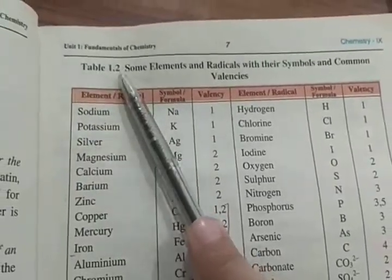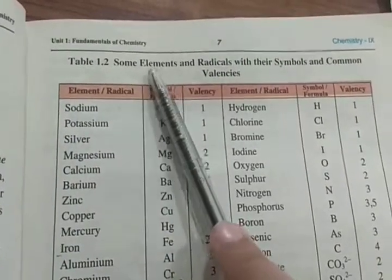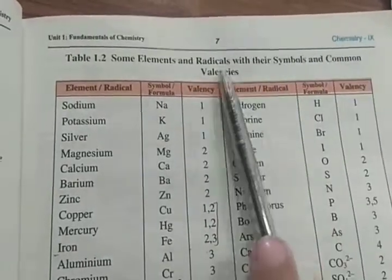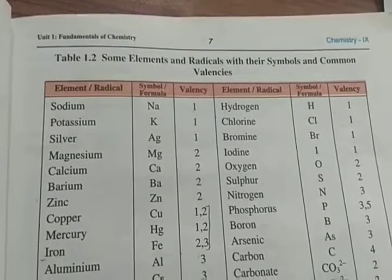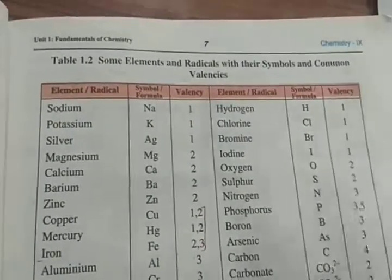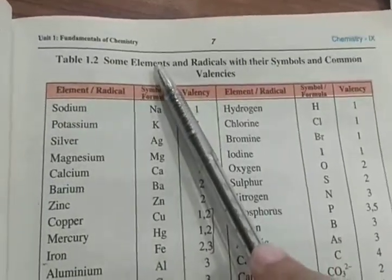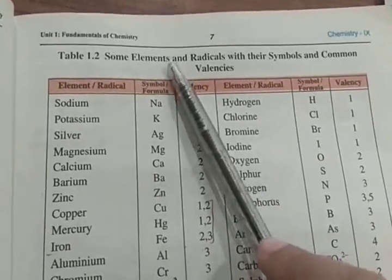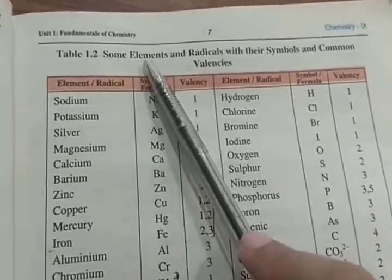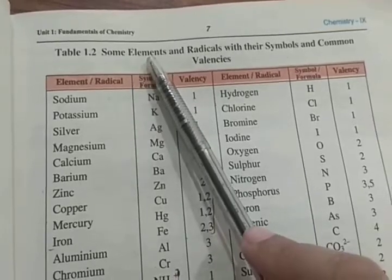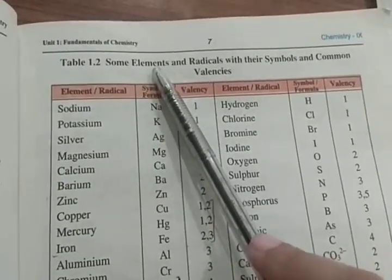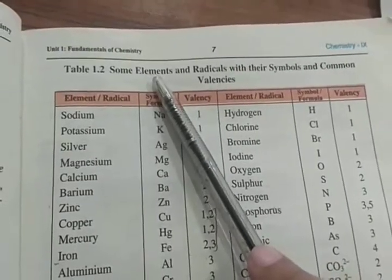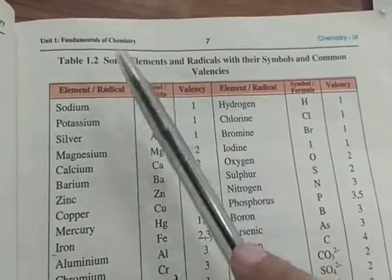Table 1.2 discusses some elements and radicals with their symbols and common valency. What is the definition of elements? It is the substance that is made up of the same type of atoms, and the atomic number is the same. We cannot further break it down by simple chemical means.